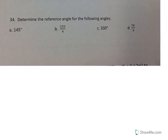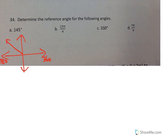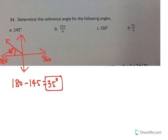Number 34, determine the reference angles for the following angles. Basically, we just need to know for each one of these, what is the reference angle. Reference angle means it's going to be close to the 180 or 360 mark. So right now, 145 degrees is about right here, and that means it is actually 35 degrees away from 180. So we take 180 minus 145, the reference angle is actually 35 degrees for part A.